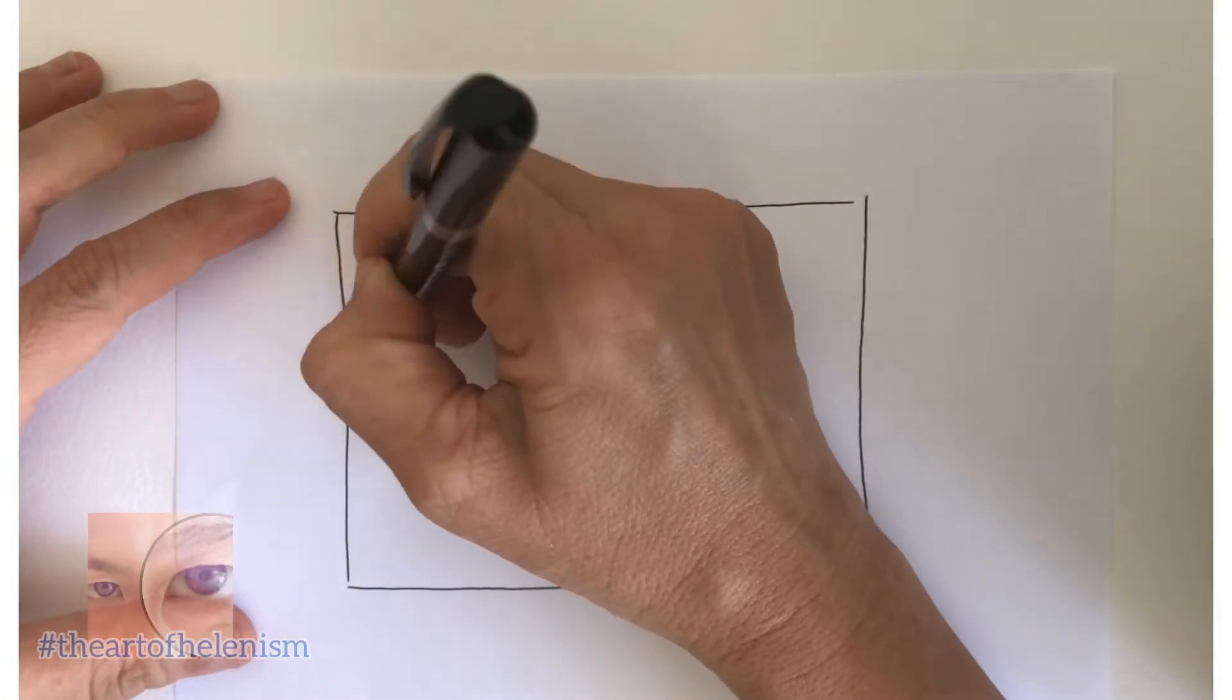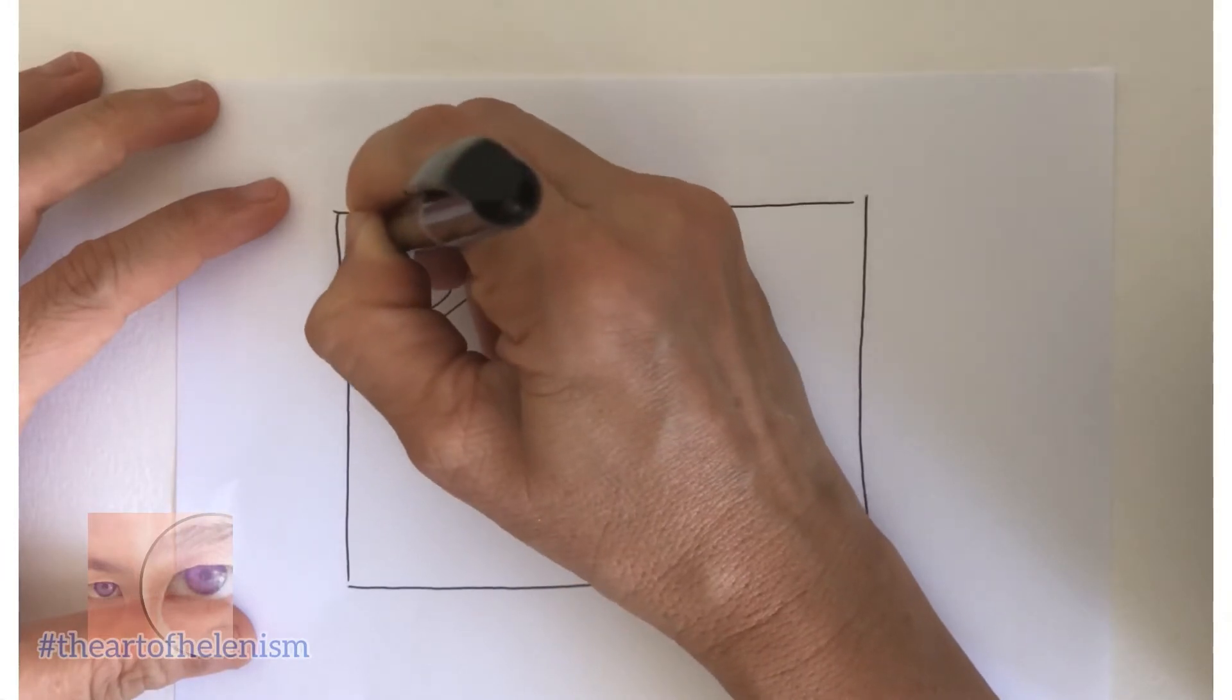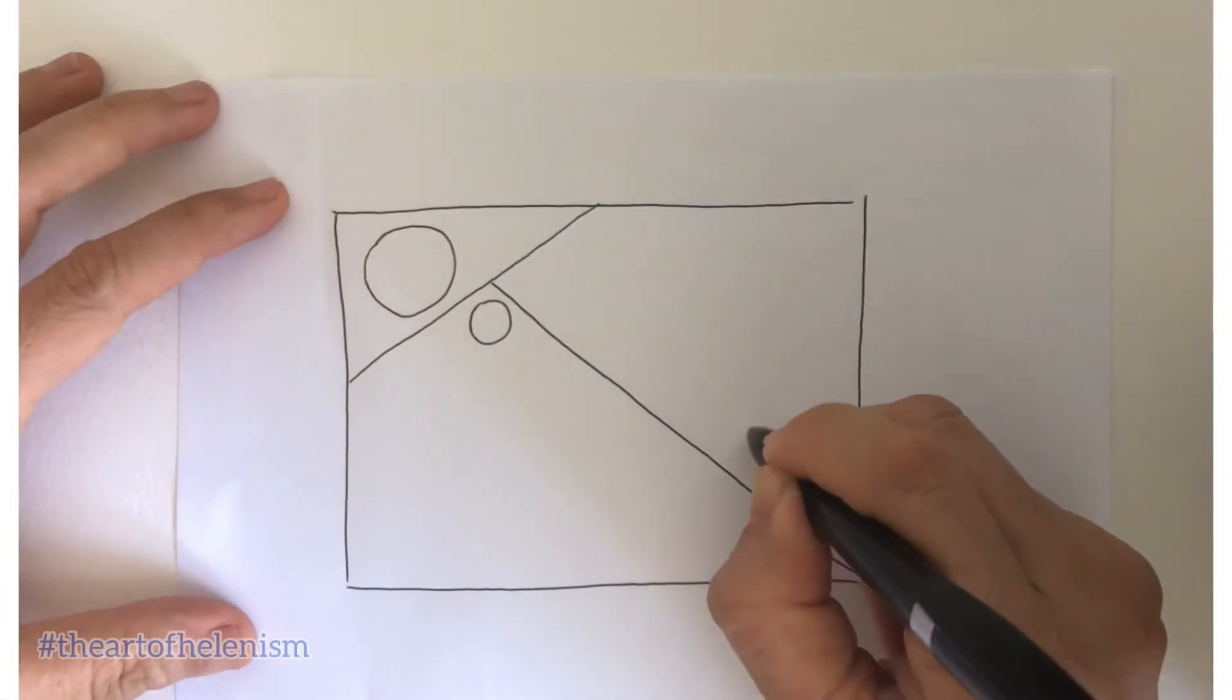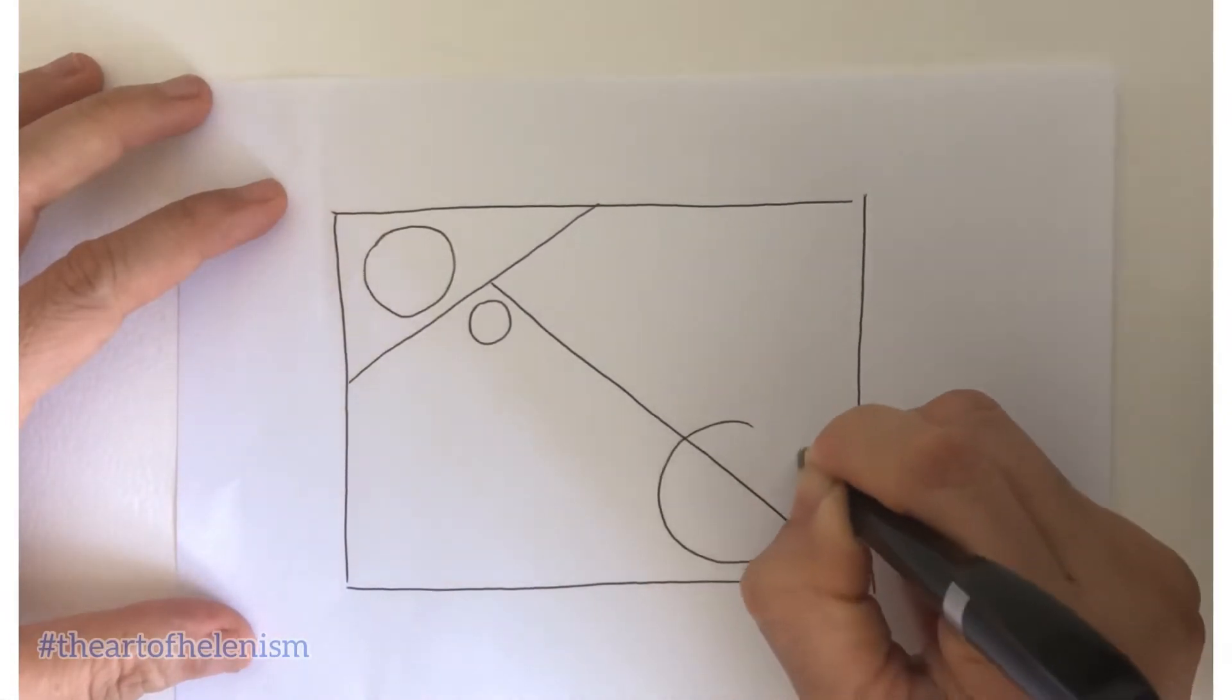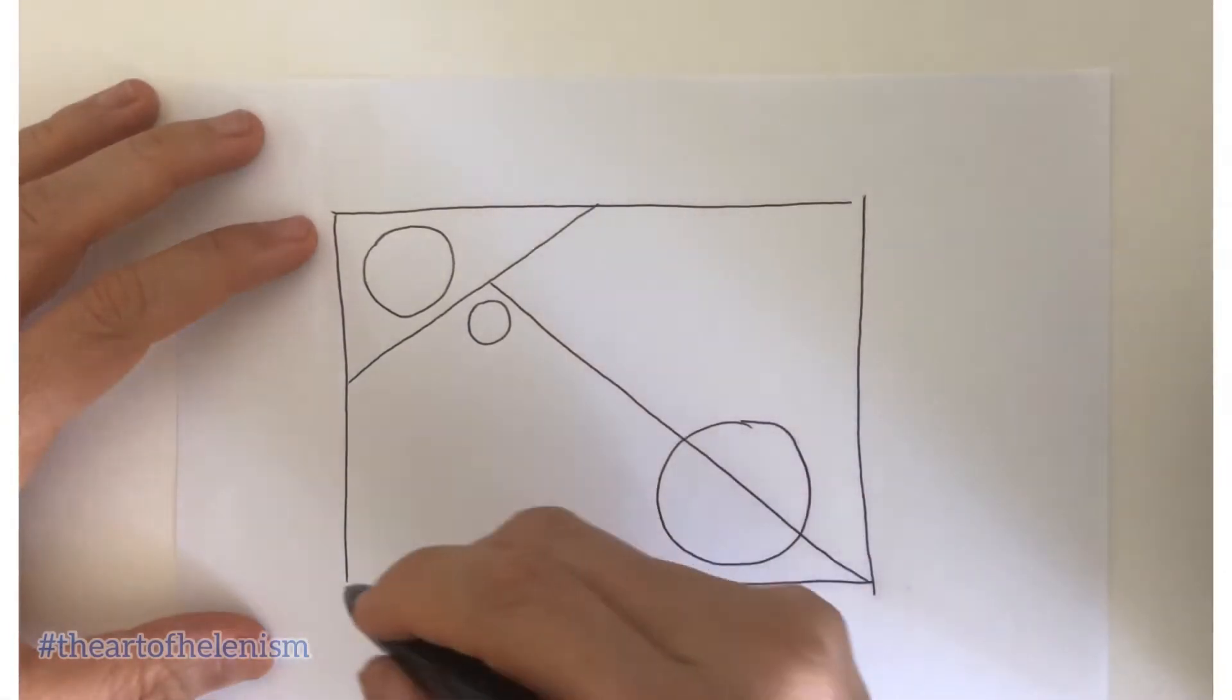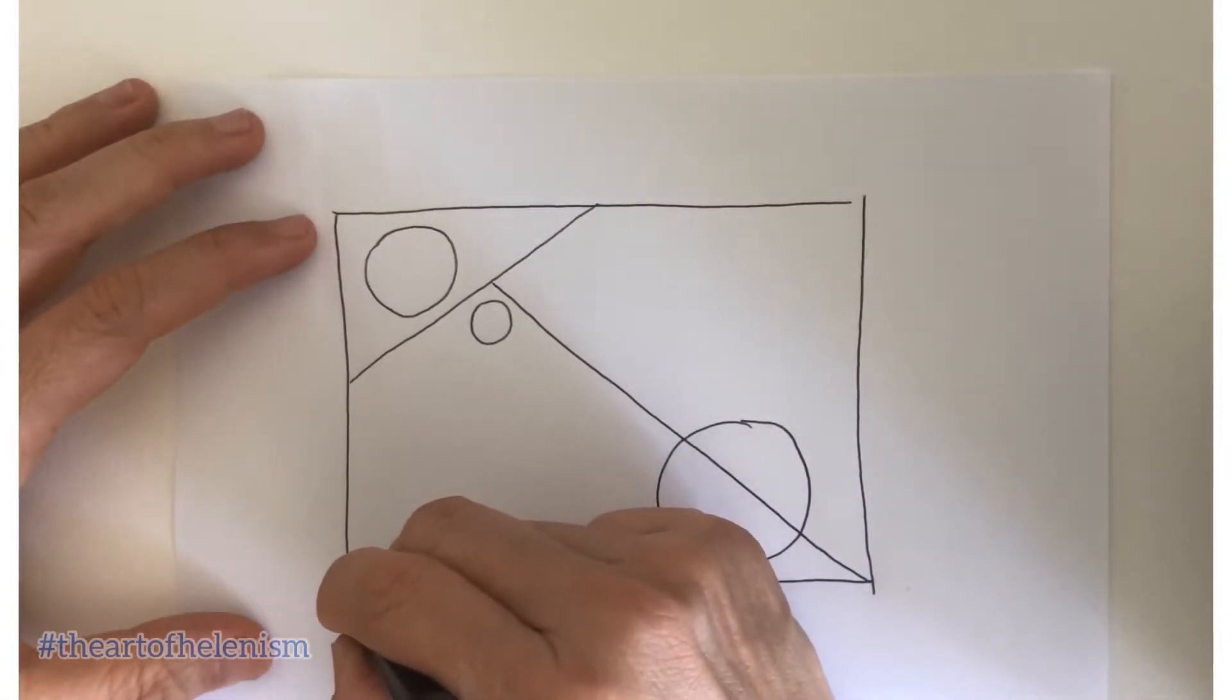Now draw one circle anywhere you like. Another circle and another circle. You can follow me or you can just draw it anywhere you like. Let it flow.